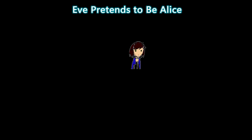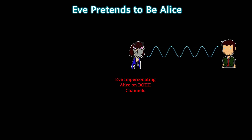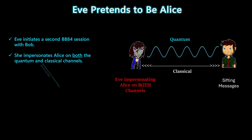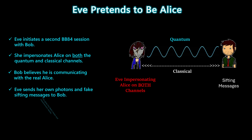Now Eve begins the second half of the attack. After intercepting all of Alice's photons, Eve starts a new BB84 session with Bob. But this time, she impersonates Alice on both the quantum and classical channels. Bob has no reason to suspect anything. He receives photons and sifting messages that appear to come from the real Alice, but every bit of information actually comes from Eve.